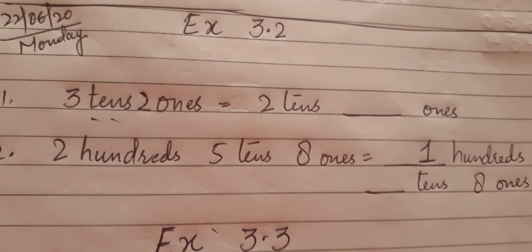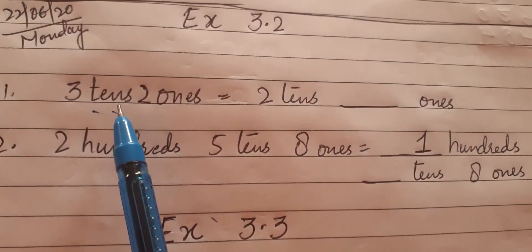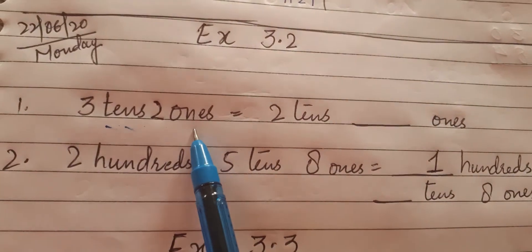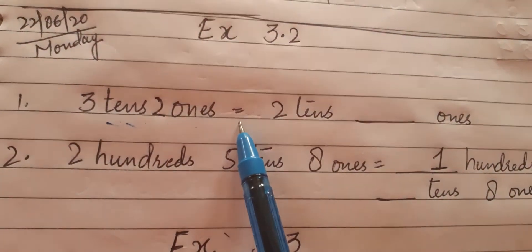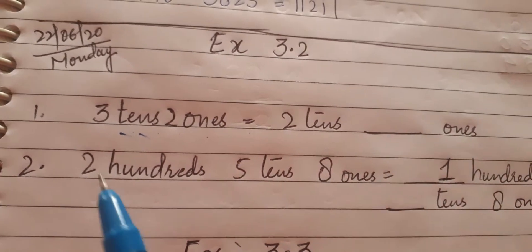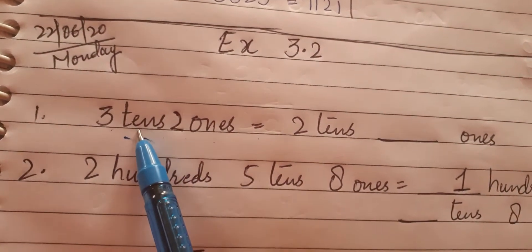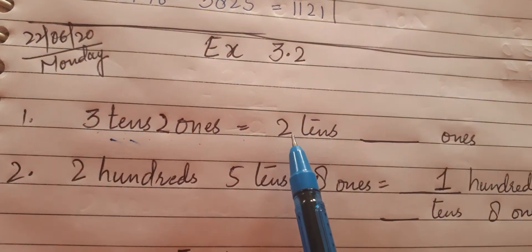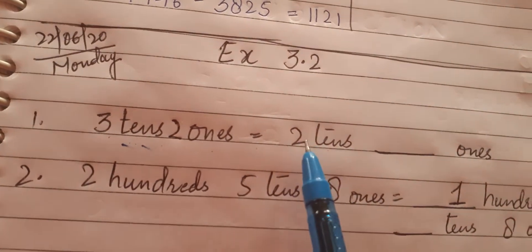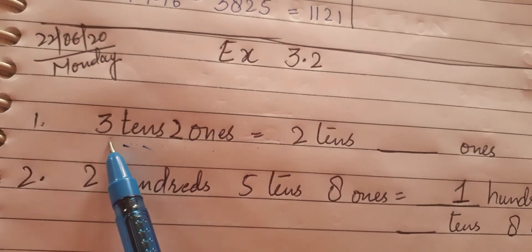Starting with the very first question of this exercise, which is 3 tens and 2 ones is equivalent to 2 tens and how many ones. Children, if you look at the number, initially we had 3 tens, but then we got 2 tens.